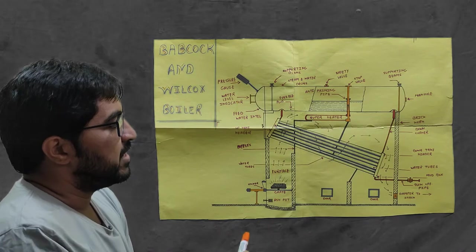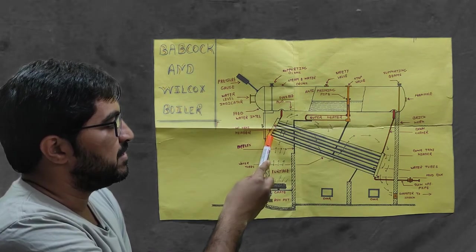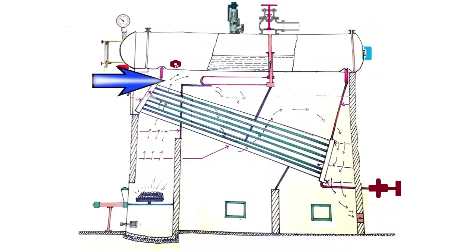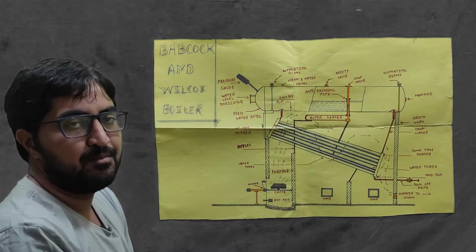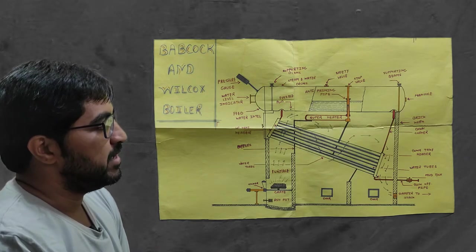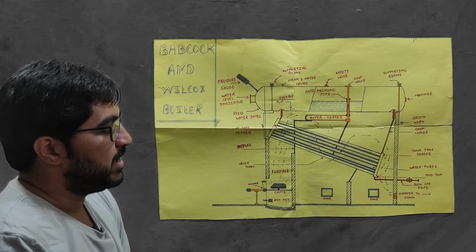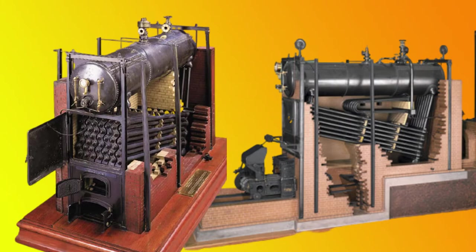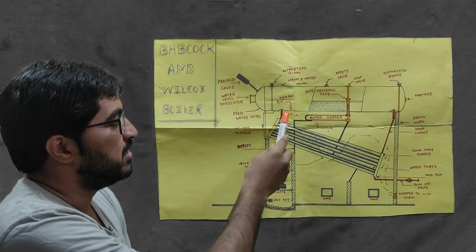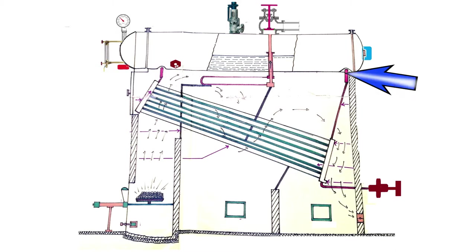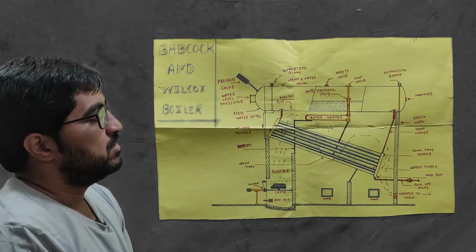This bundle of tubes is connected with the uptake header on the left-hand side and the downtake header on the right-hand side. Both headers are connected with the shell. This is a horizontal type, water tube boiler — inside the tubes water is present and outside the flue gases are there. The uptake header is connected with the shell via a short tube, and the downtake header is connected with the shell via a long tube.